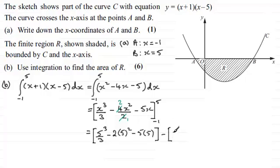Okay so we've got that one and from this we subtract what we get when we put the minus 1 through. So we're going to have minus 1 all cubed over 3 minus 2 times minus 1 squared and then minus 5 times minus 1. And just complete that square bracket there.